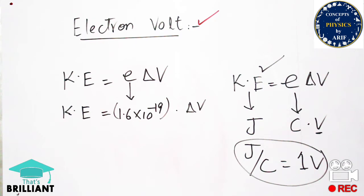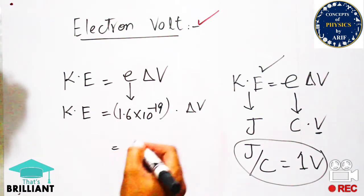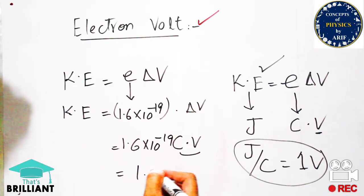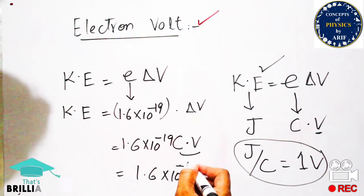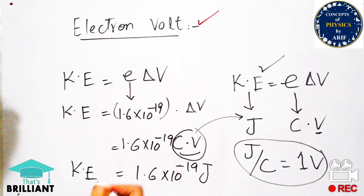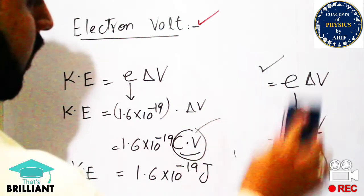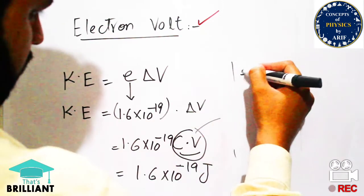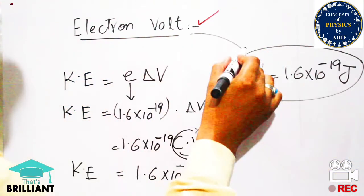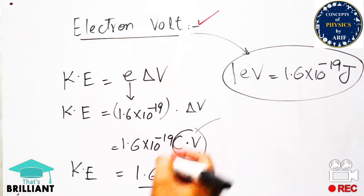The kinetic energy has a unit of joule, the unit of charge is coulomb, and the potential difference is in volts. We assemble these units to calculate the value of one electron volt. One electron volt is a unit of energy equal to 1.6 into 10 to the minus 19 joule, because coulomb multiplied by volt gives joule. So one electron moving through a potential difference of one volt has kinetic energy equal to 1.6 into 10 to the minus 19 joule.